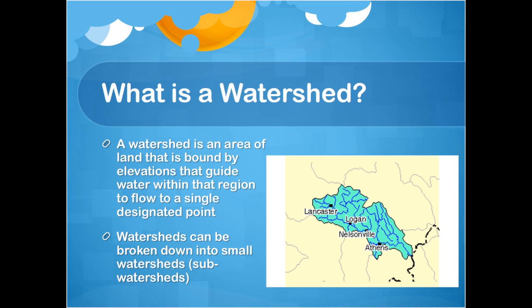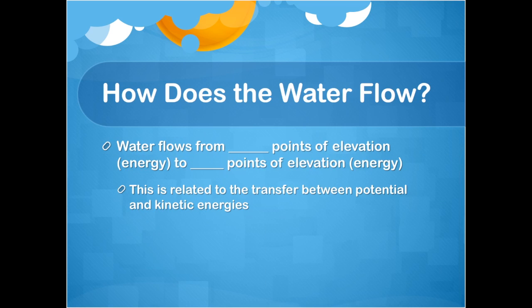What does that really mean? All drops of water that fall anywhere within this region will eventually end up at the same point at the end of the watershed. If a water droplet falls outside the watershed boundaries, it is part of a different watershed and flows to a different point. The question becomes: how do we know which way the water will flow? We won't come across a watershed boundary conveniently placed in the woods, so how do we delineate the watershed boundary?